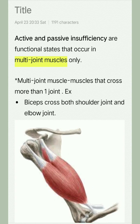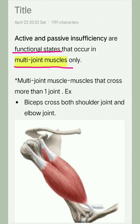In this video I will be talking about active and passive insufficiency. Active and passive insufficiency are functional states that occur in multi-joint muscles only.